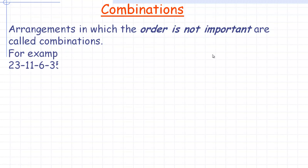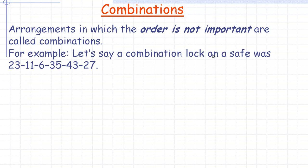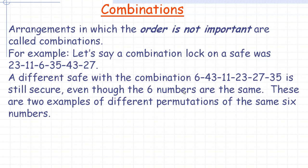Here's an example, and you have to be careful how you interpret the word 'combination,' because it actually has more than one meaning. The word 'combination' on a combination lock on a safe has a different meaning. So let's say you had a combination lock on a safe, and the combination was 23, 11, 6, 35, 43, 27 — those numbers in that specific order. If you had a different safe using the same numbers but in a different order, that would still be secure.